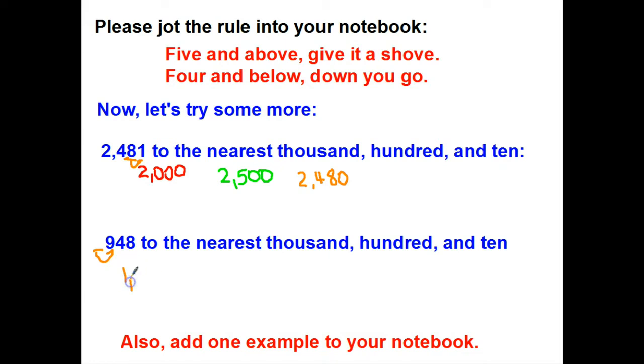And if you think about it, that makes sense, because 948 is closer to a thousand than it is to zero. Let's take a look at rounding it to the nearest hundred. So if I wanted to round it to the nearest hundred, well, here's my hundreds place. There's my nine. Look to the right. There's a four. Four and below. Down you go. This is going to round to 900.